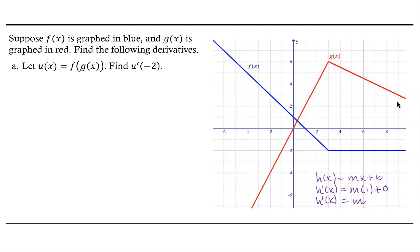We're going to use that to help us find the derivative of the functions provided here. Our first function is u of x, and u of x is defined as f of g of x, and what we want to do is find u prime at negative 2. So the first thing we're going to do is figure out what u prime of x looks like symbolically. Applying the chain rule, u prime of x will be f prime of g of x — the derivative of the outer function with the inner function left alone — multiplied by g prime of x, the derivative of the inner function. That's the template for u prime of x.